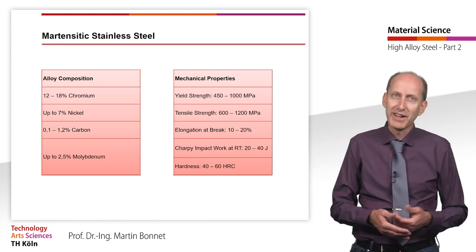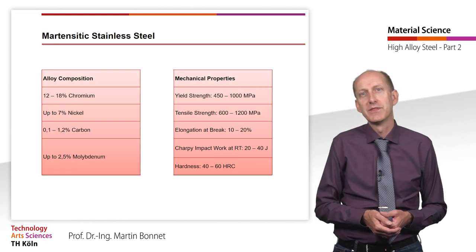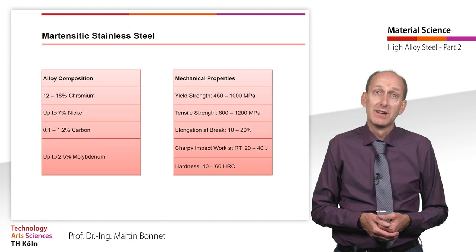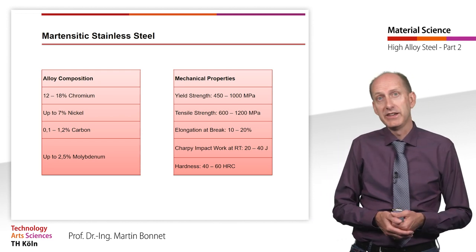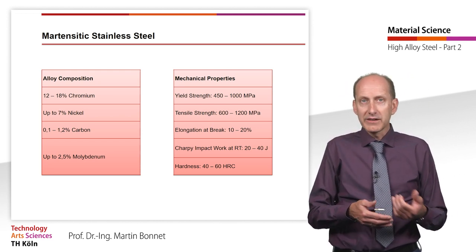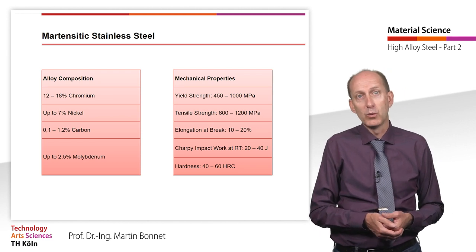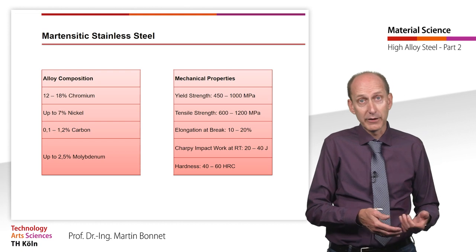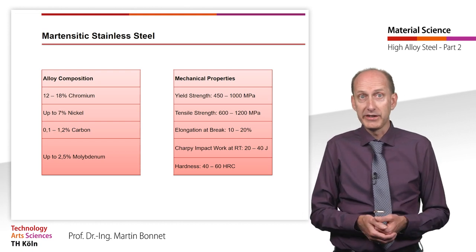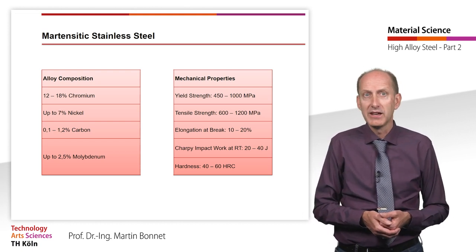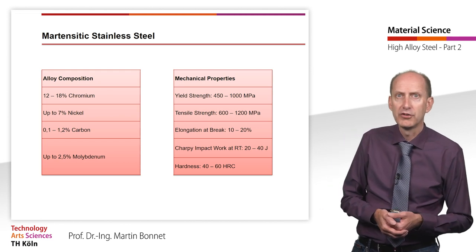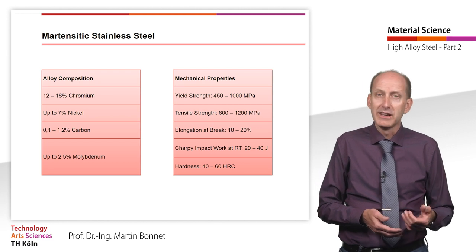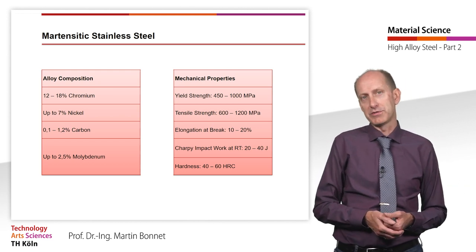However, we will discuss this intergranular corrosion in more detail in following videos on corrosion. Nickel martensitic steel is appreciably ductile even at high strength, with impact work greater than 40 Joules, because unlike ferritic and martensitic steel with higher carbon contents, it does not exhibit a pronounced temperature dependence of notched impact strength. That is to say, it can also be used at lower temperatures.